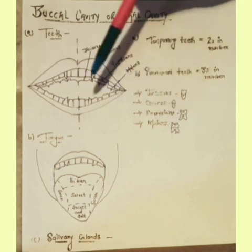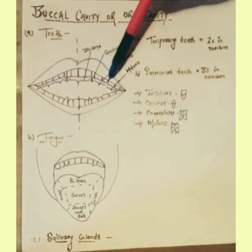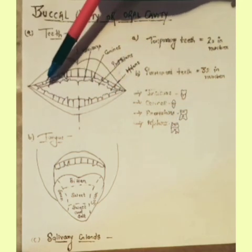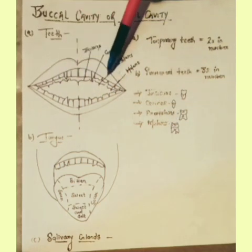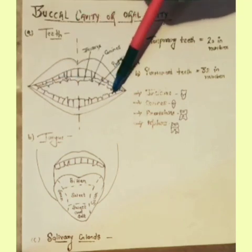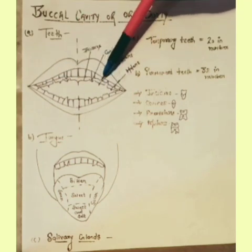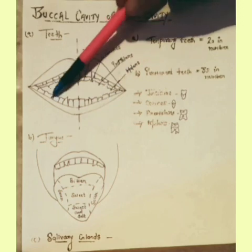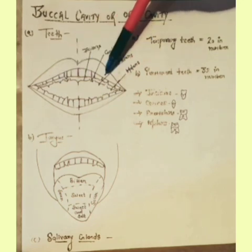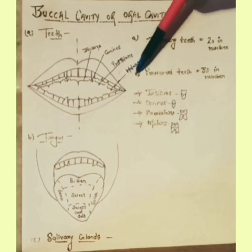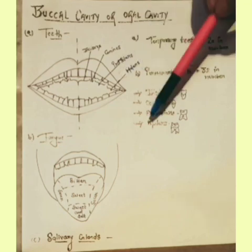Six large broad back teeth on either side of the premolars in each jaw that help to chew and grind food are called molars.